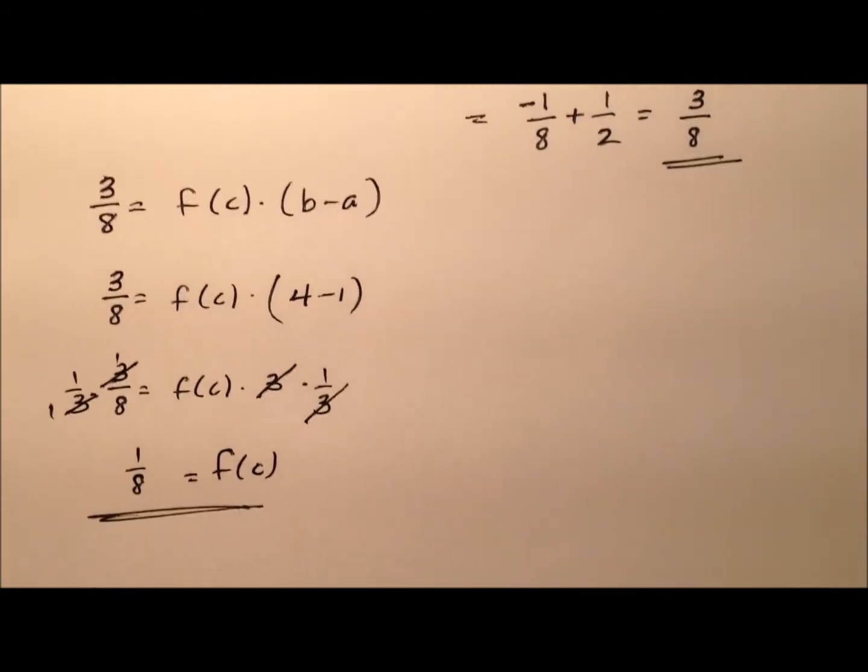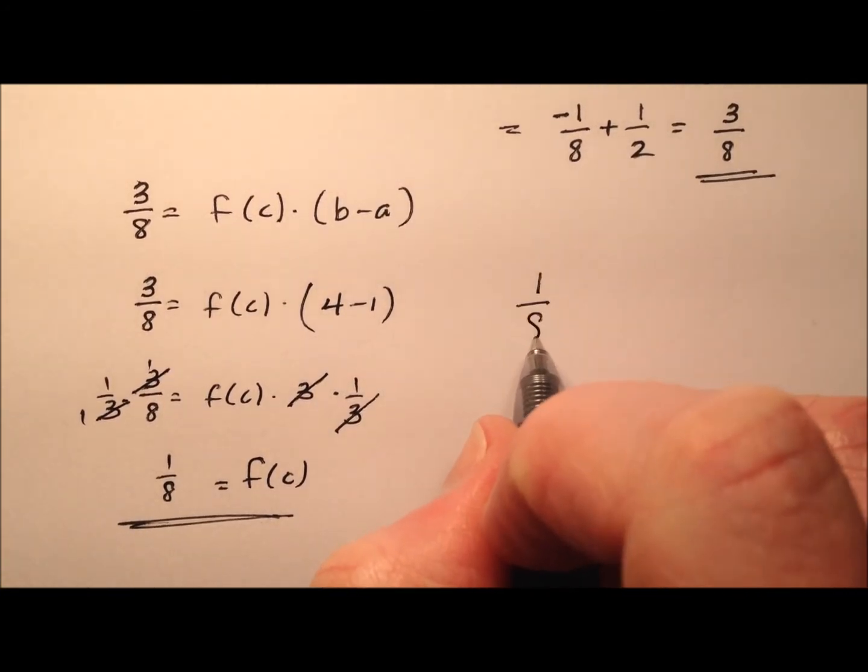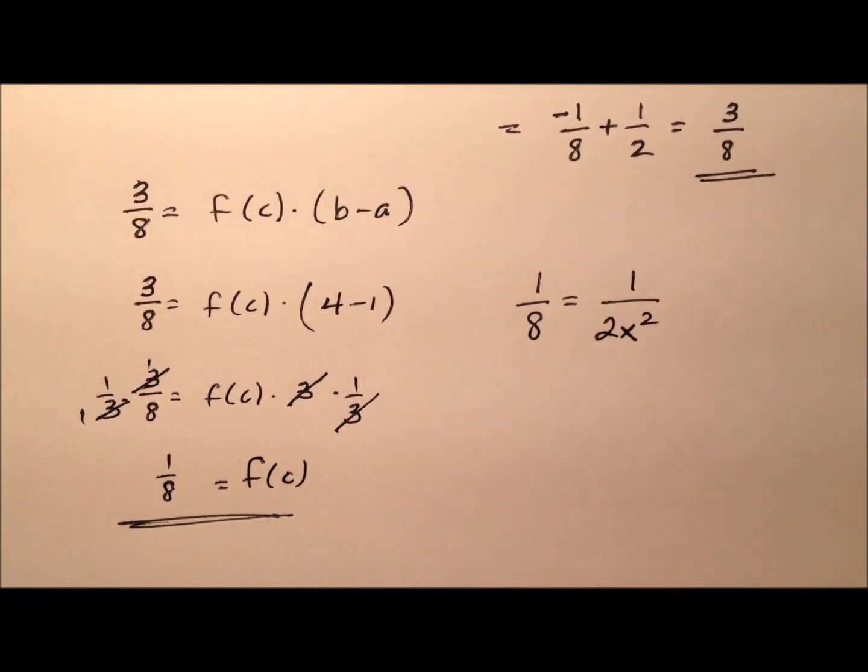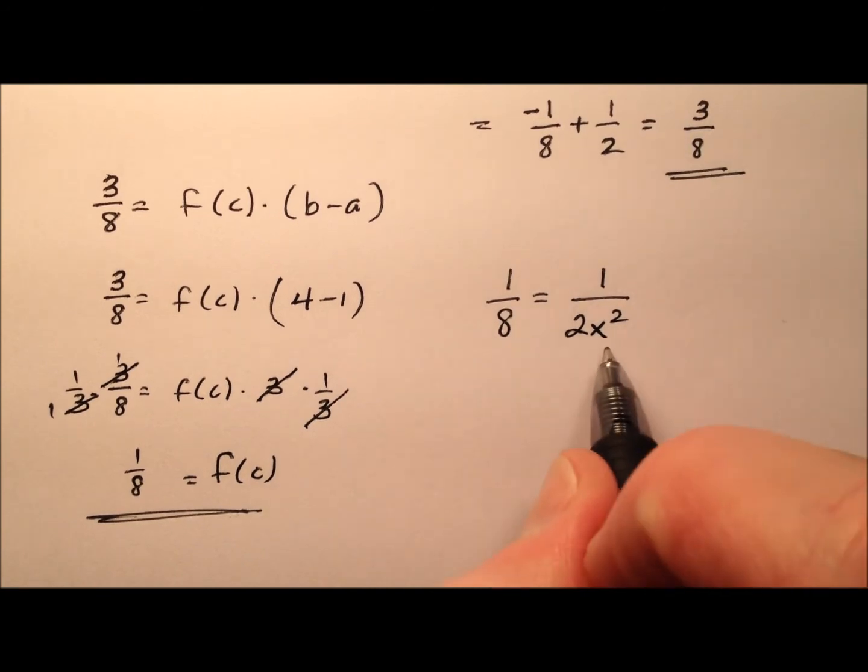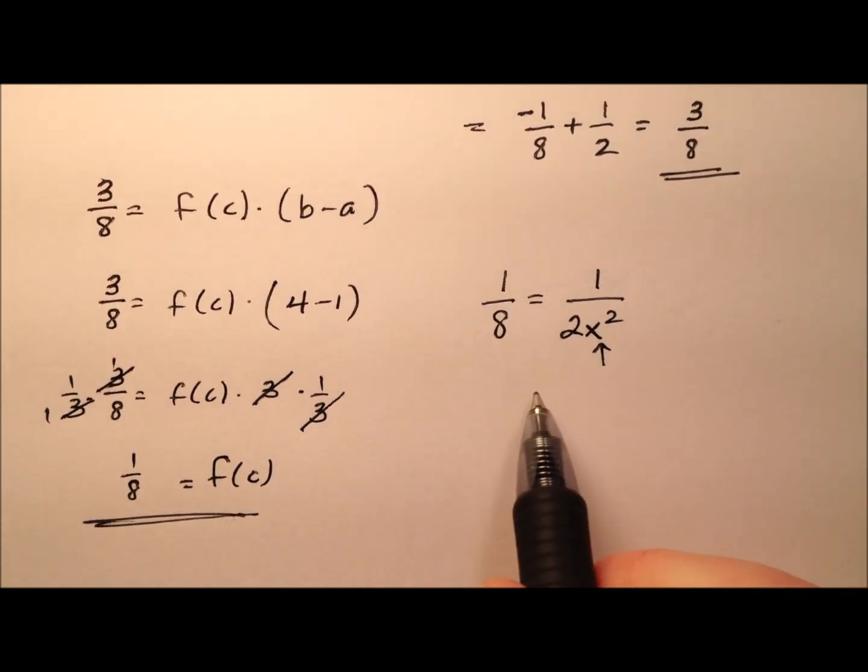But I'm not looking for the f of c, I'm looking for the actual c value. So I'm going to take this one eighth, and I'm going to set it equal to my function, one over 2x squared. And when I solve for this x, that's going to give me that c value I'm looking for.